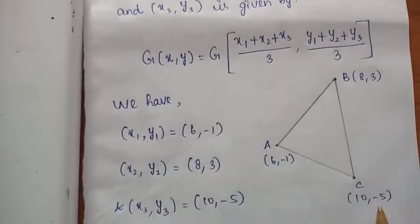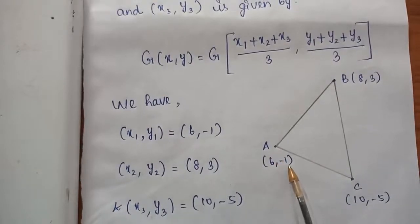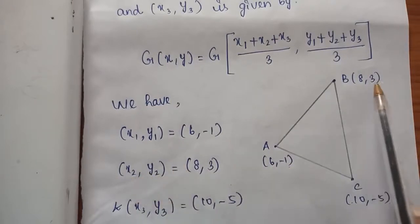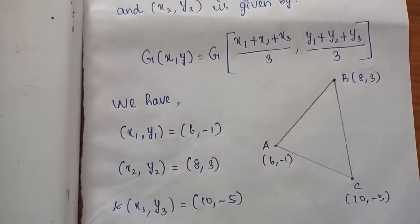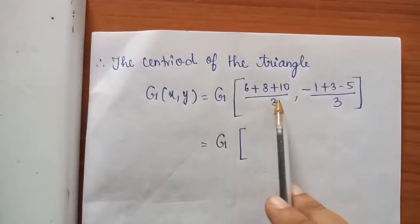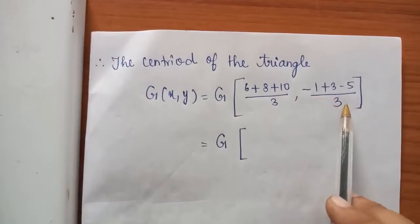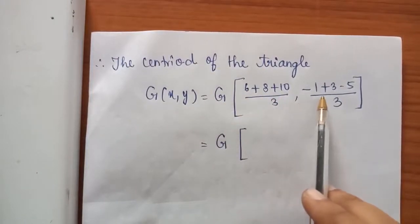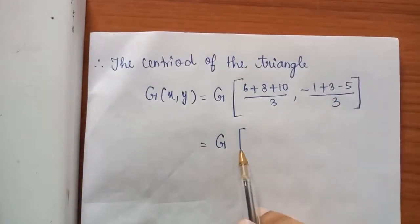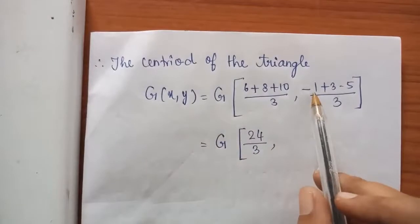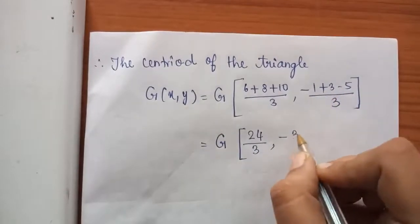We draw a triangle and mark the vertices: X1,Y1 = 6,-1 and X2,Y2 = 8,3 and X3,Y3 = 10,-5. Substituting into the formula: G(X,Y) = ( (6+8+10)/3 , (-1+3-5)/3 ) = ( 24/3 , -3/3 ).